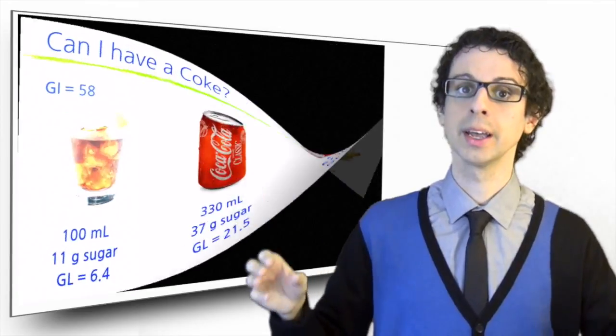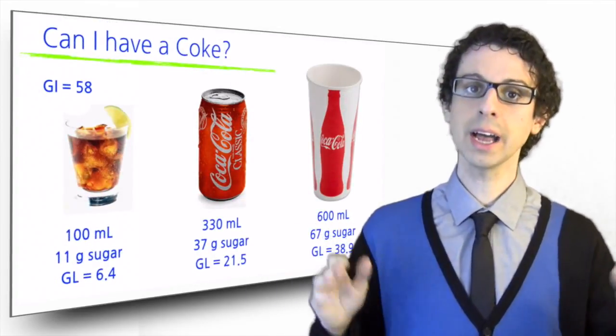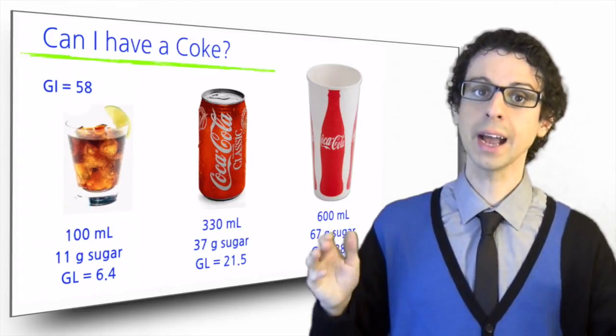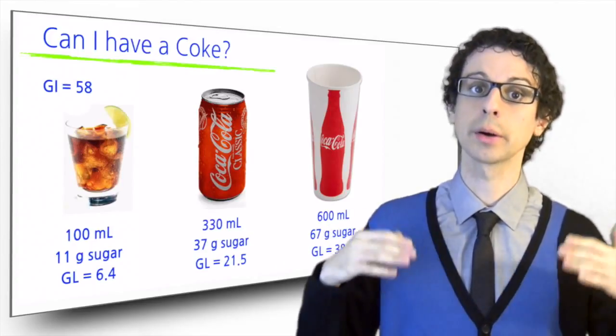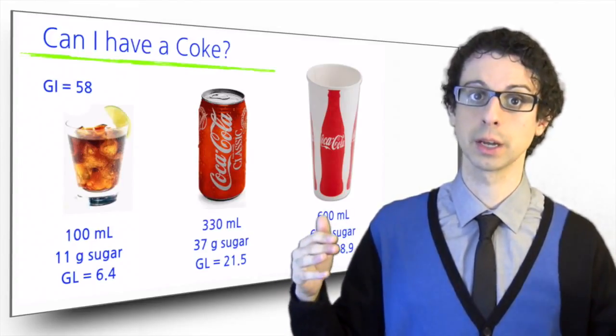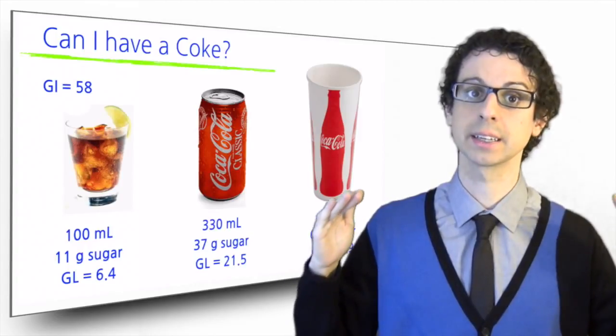Take this Coke, its glycemic index is 58. A small 100 ml glass, a 330 ml can, or a large 600 ml fast food cup, all have a glycemic index of 58.